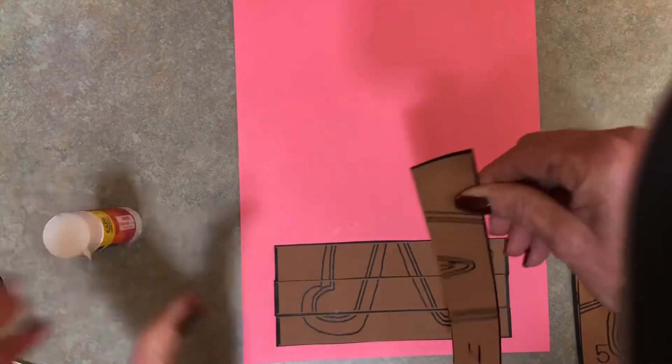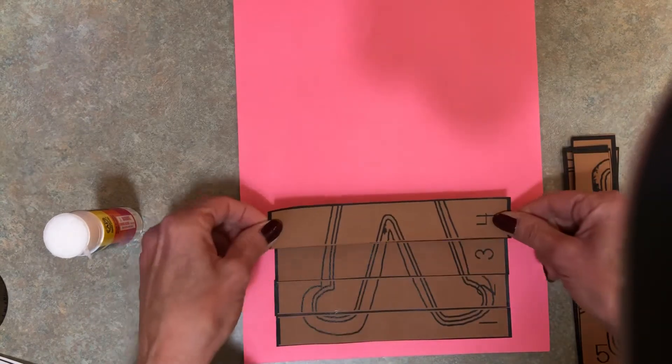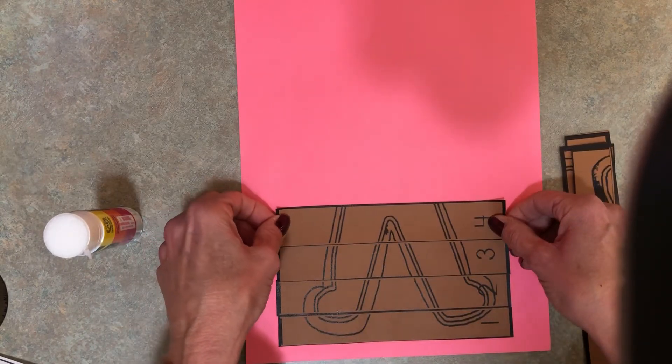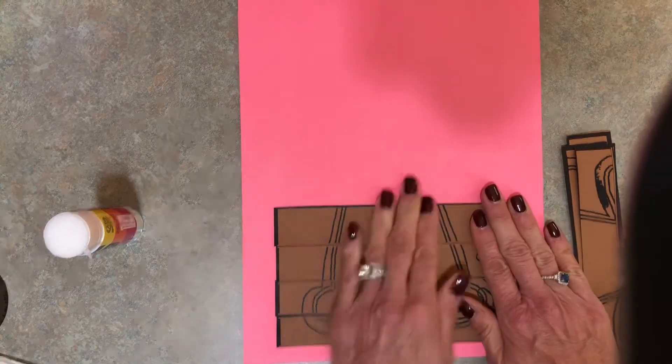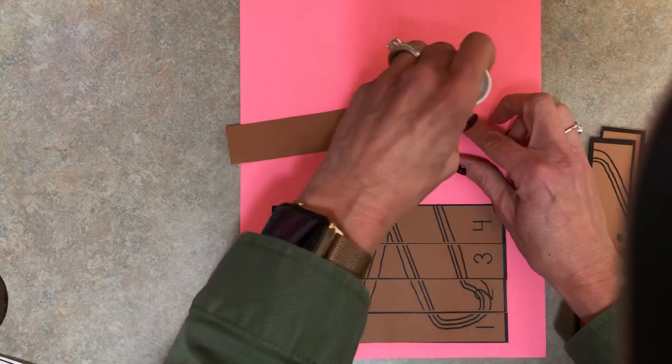There comes four. Now notice, if you do it four on this side, it's not going to line up, so you got to make sure all your numbers are on the right-hand side. Okay, after four comes five.